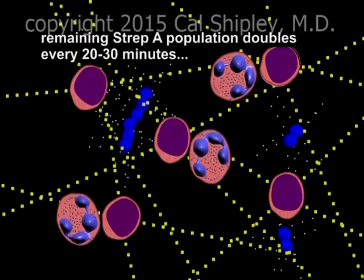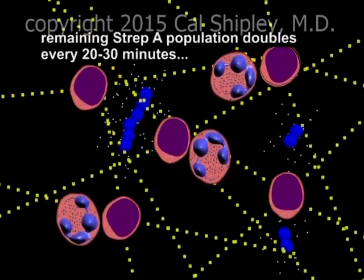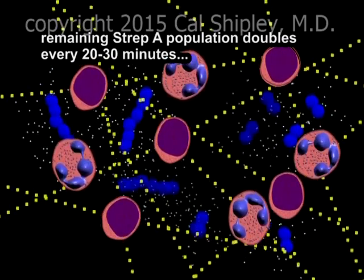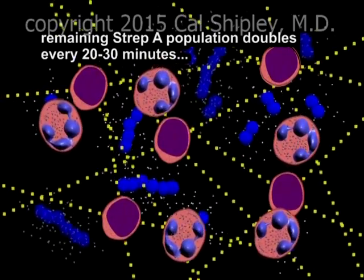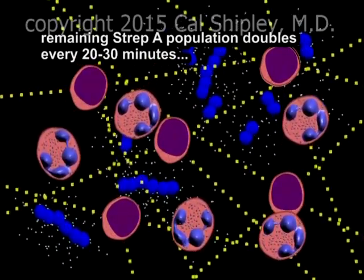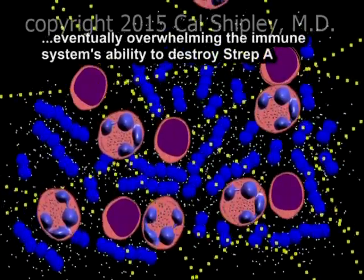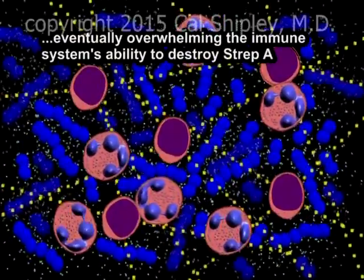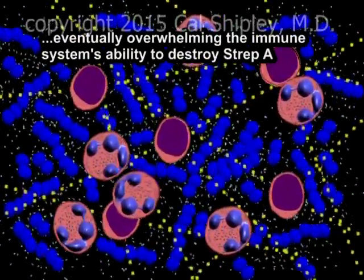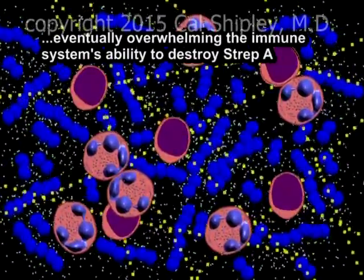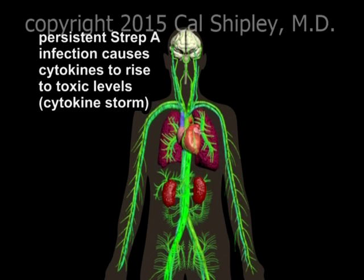The total population of GAS is capable of doubling every 20 to 30 minutes. Depending on the rapidity and strength of the initial immune response, the Group A Strep may quickly overwhelm the body's ability to contain the infection. As the numbers of Group A Strep increase, so too does the amount of exotoxin excreted, with a corresponding rise in total serum levels of cytokines. As levels rise, the cytokines go from being helpful to being harmful. This is the beginning of septic shock.